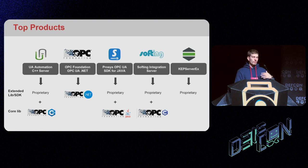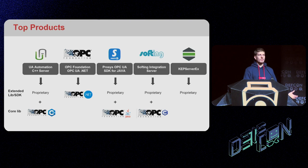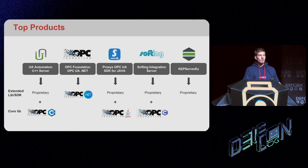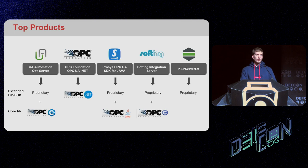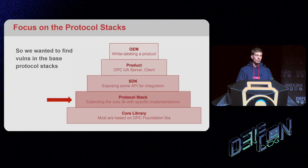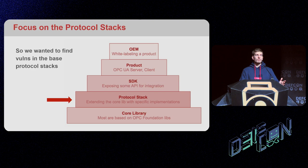The problem is that most products heavily rely on the base protocol stacks OPC Foundation created. Looking at top products implementing OPC UA, most use OPC Foundation core libraries. For example, the OPC Foundation .NET is the actual first OPC UA .NET protocol stack — vendors created products that use those core libraries and added a little of their own code. But in essence they're still using the same core. So we wanted to find vulnerabilities in the base protocol stacks to exploit not just one product but all of them.